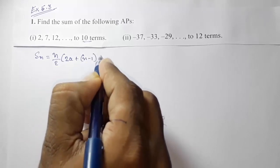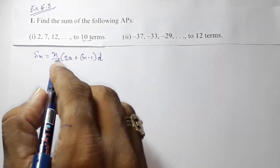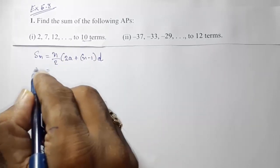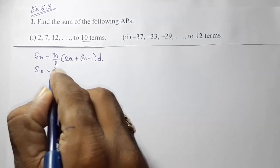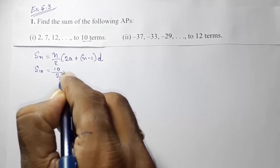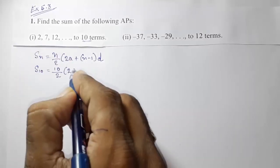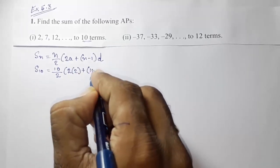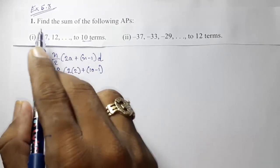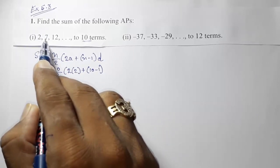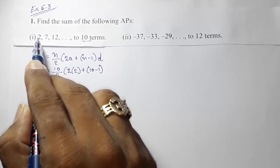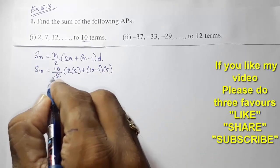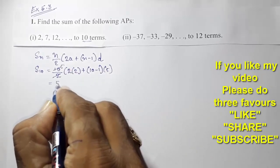We have n, so S10 = 10/2 × (2a + (n−1) × d). Our first term a is 2. Now we also need to find the common difference d: 7 − 2 = 5. So d = 5. After cancellation, 10/2 becomes 5.